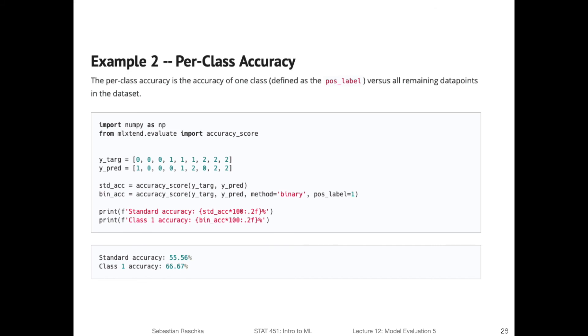All right, so then how do we do that in Python? This is what can be implemented using the accuracy score from ML extend. The ML extend accuracy score fundamentally works the same way as scikit-learn, but it has this extra functionality for computing the binary accuracy, which is binarizing the accuracy like I showed you before. Here, I don't use a concrete classifier, just a toy example of the true labels and the predicted labels. And then here, that's the standard accuracy score. In this case, it's 55.56%.